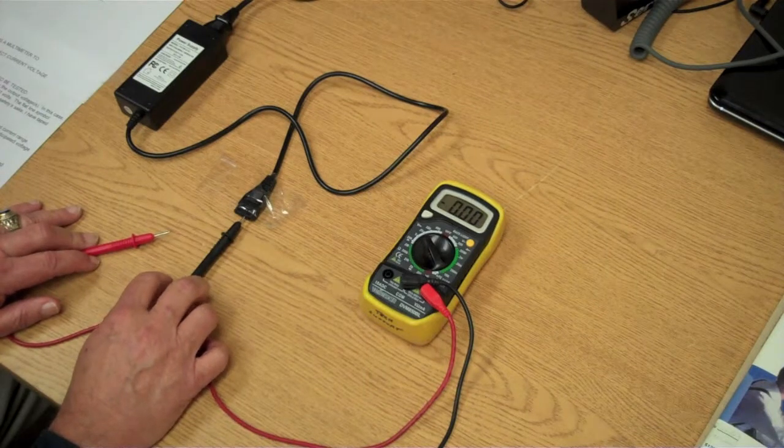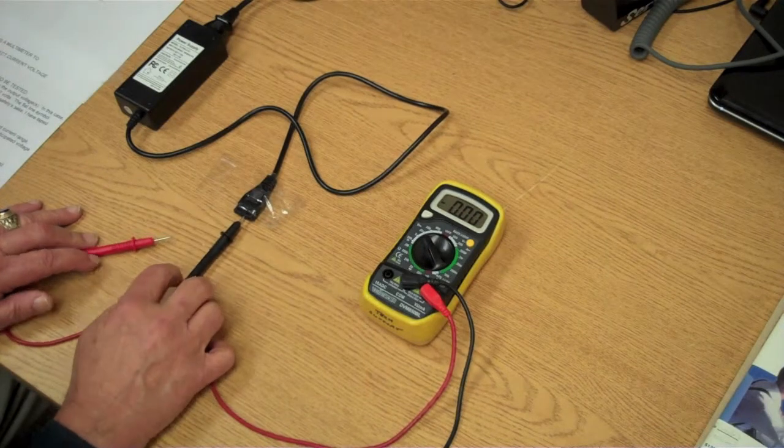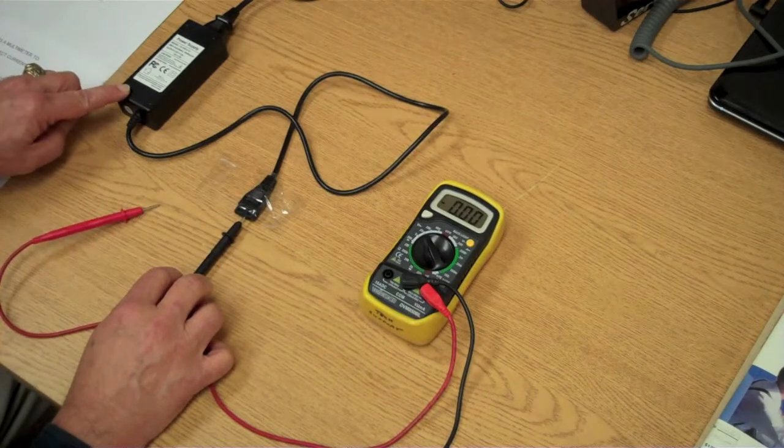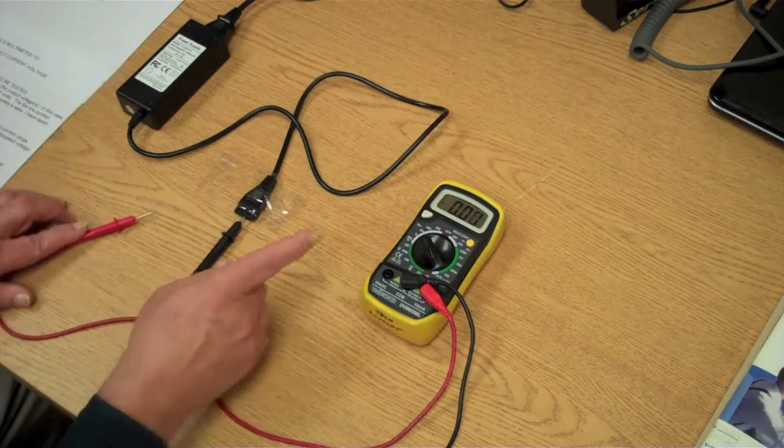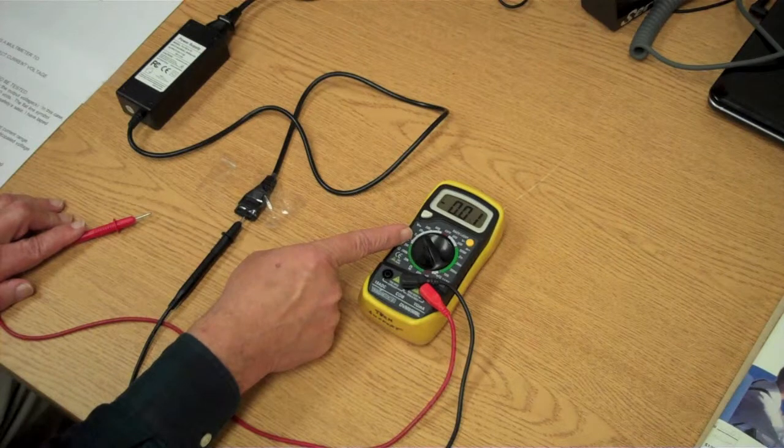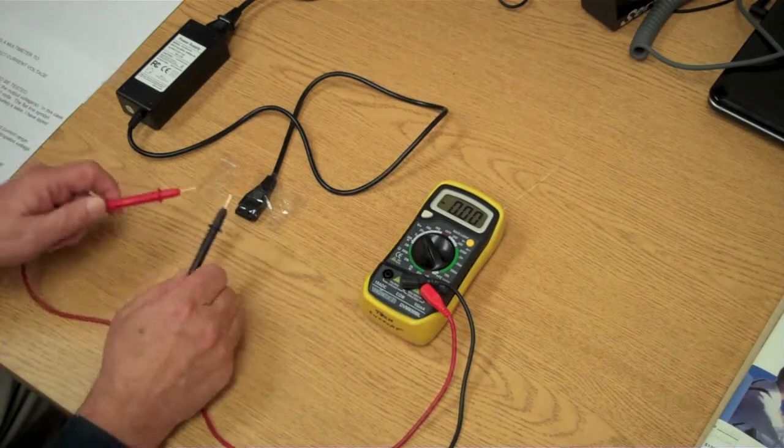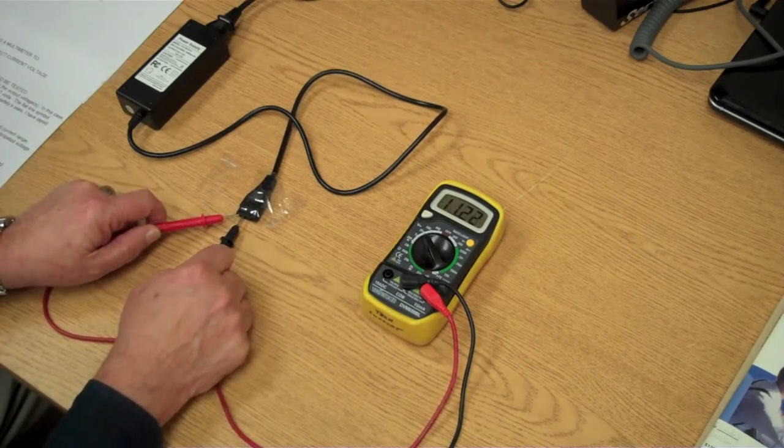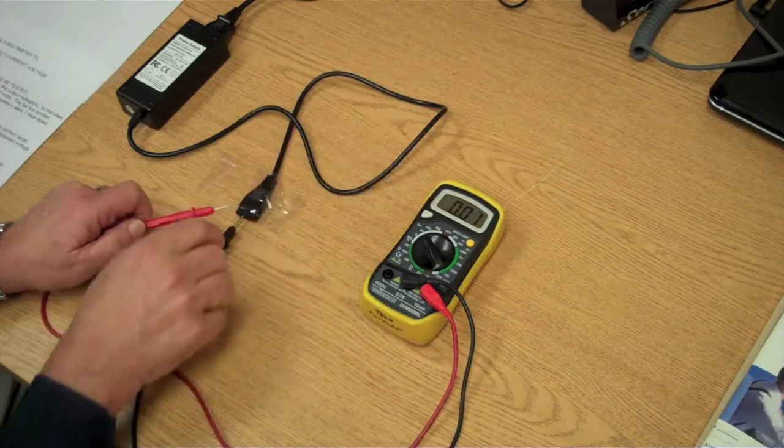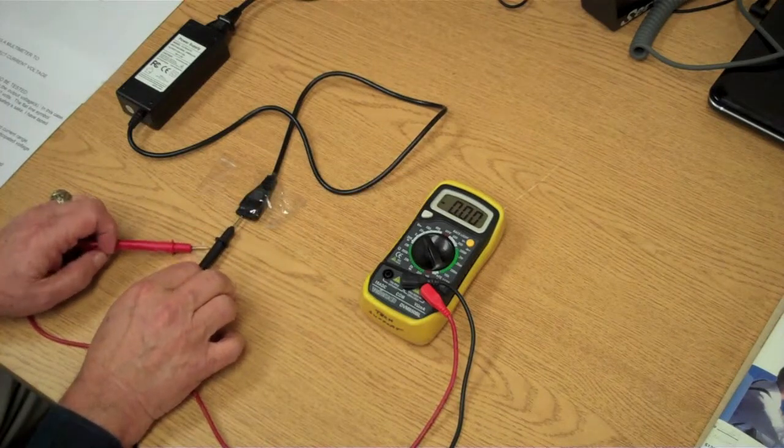Remember, you read the output voltage of the item to be tested from the device you're testing it on. You select the appropriate scale on the meter. You put the probes in the correct contact points, and then you read the scale. That's the end of it.